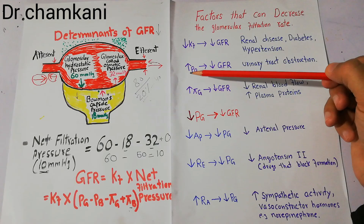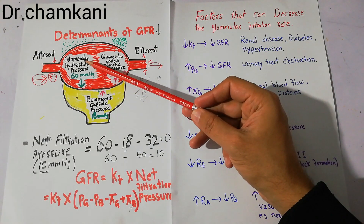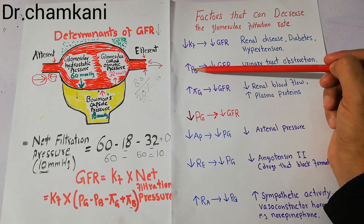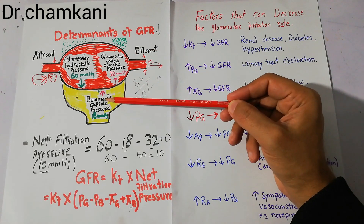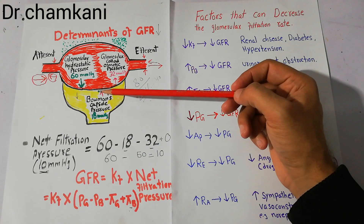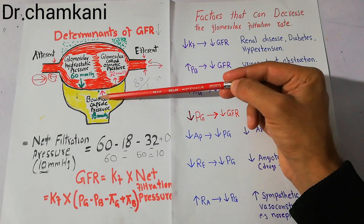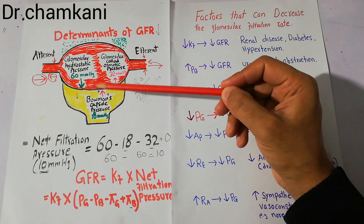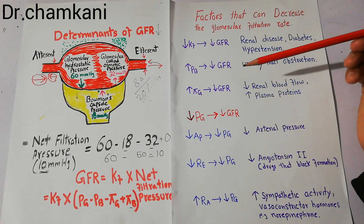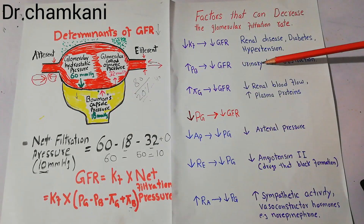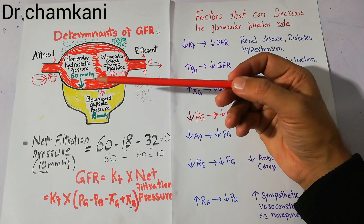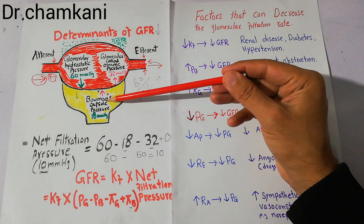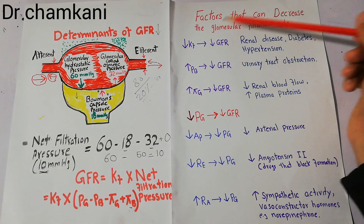The second factor is an increase in Bowman's capsule pressure (PB). We have discussed multiple times that glomerular hydrostatic pressure favors filtration, but Bowman's capsule pressure and glomerular colloid osmotic pressure oppose the filtration process. Any factor which increases Bowman's capsule pressure will decrease the GFR. The most common cause for an increase in this pressure is urinary tract obstruction — conditions like renal calculi or kidney stones that block urine flow from the Bowman's capsule down to the ureter at any level will increase Bowman's capsule pressure and decrease GFR.